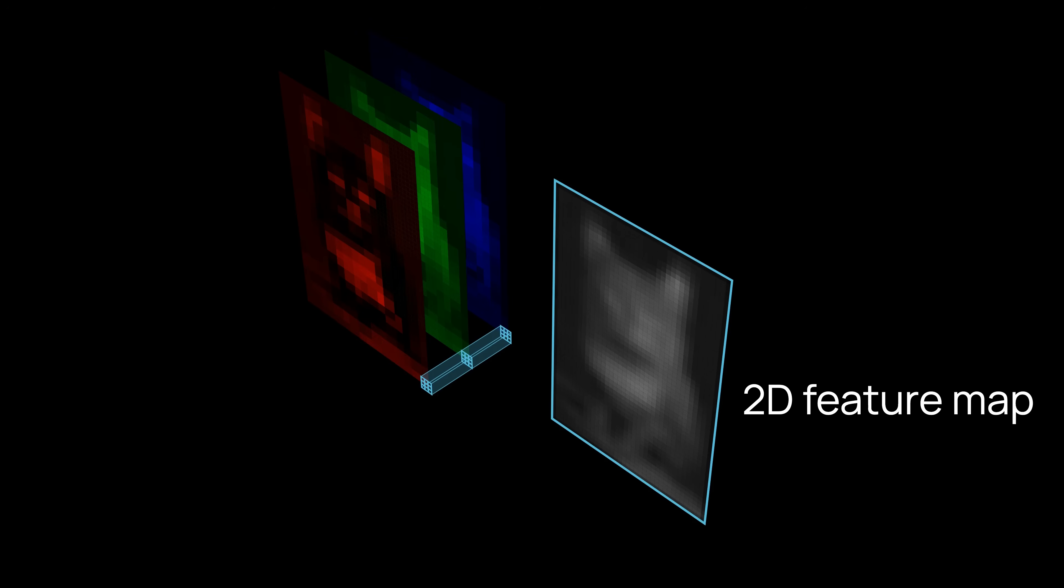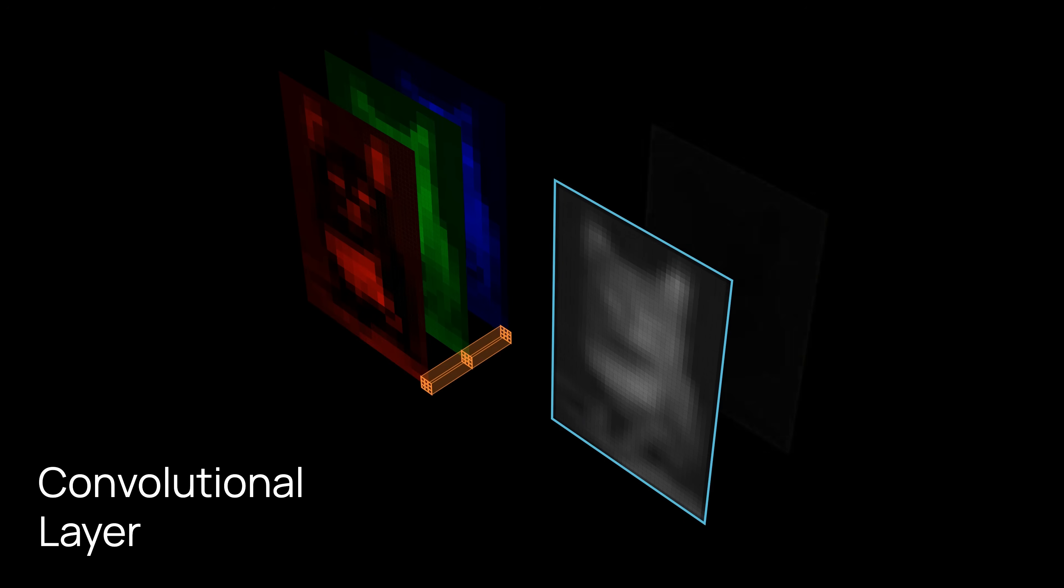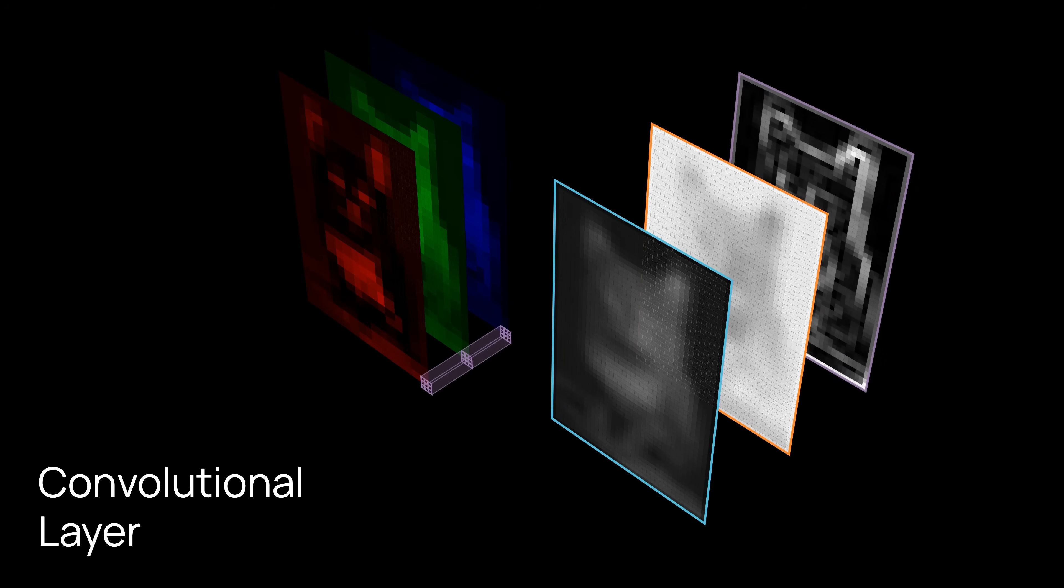Deep learning generalizes this idea. Instead of three separate yet identical 2D kernels, it learns a single 3D kernel that can mix information across input channels. The output is what we call a 2D feature map. It basically has a single channel. A convolutional layer simply stacks multiple kernels. With n kernels, you get n feature maps or n output channels.